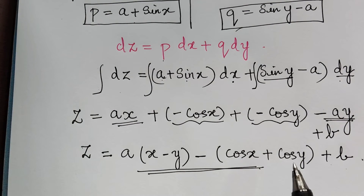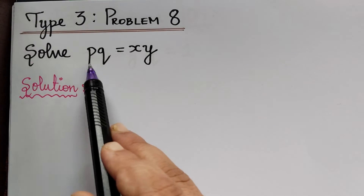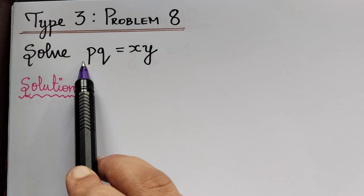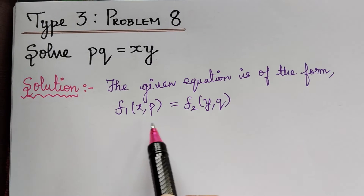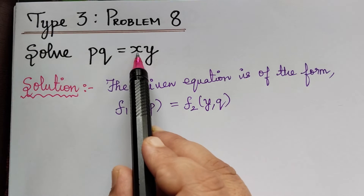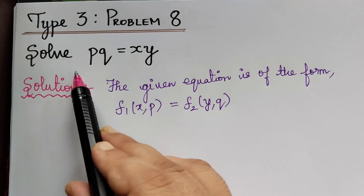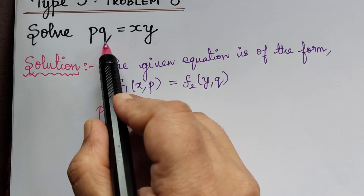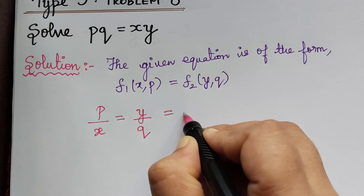Now we solve problem 8: solve pq equals xy. We see that only x, y, p, and q are present and z is not present. So the equation is of the form f1 of x comma p equals f2 of y comma q. Bringing x to the left, we have p by x equals y by q, and this is equated to a constant a.